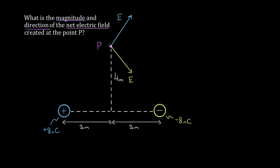The field created by this positive charge is gonna have a horizontal component pointing to the right — I'll call that blue EX — and a vertical component pointing upward, I'll call that blue EY. Similarly, for the electric field the negative charge creates, it has a horizontal component that points to the right, yellow EX, and a vertical component that points downward, yellow EY.